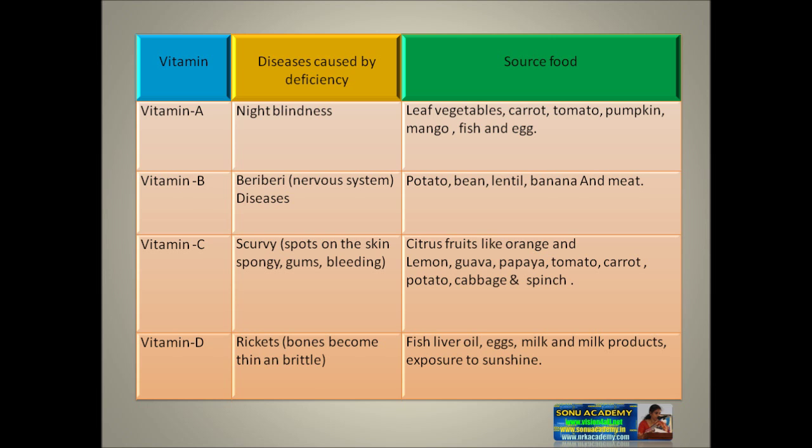Vitamin D deficiency causes diseases where bones become thin and brittle. If we get sufficient Vitamin D, the food sources rich in it include fish liver oil, egg, milk and milk products, and exposure to sunshine.